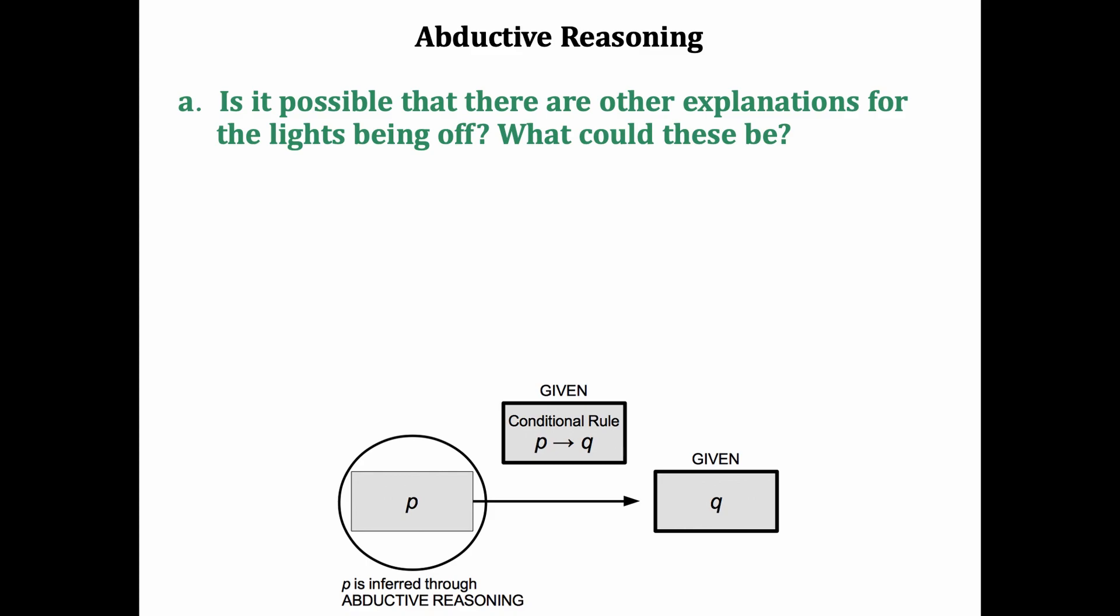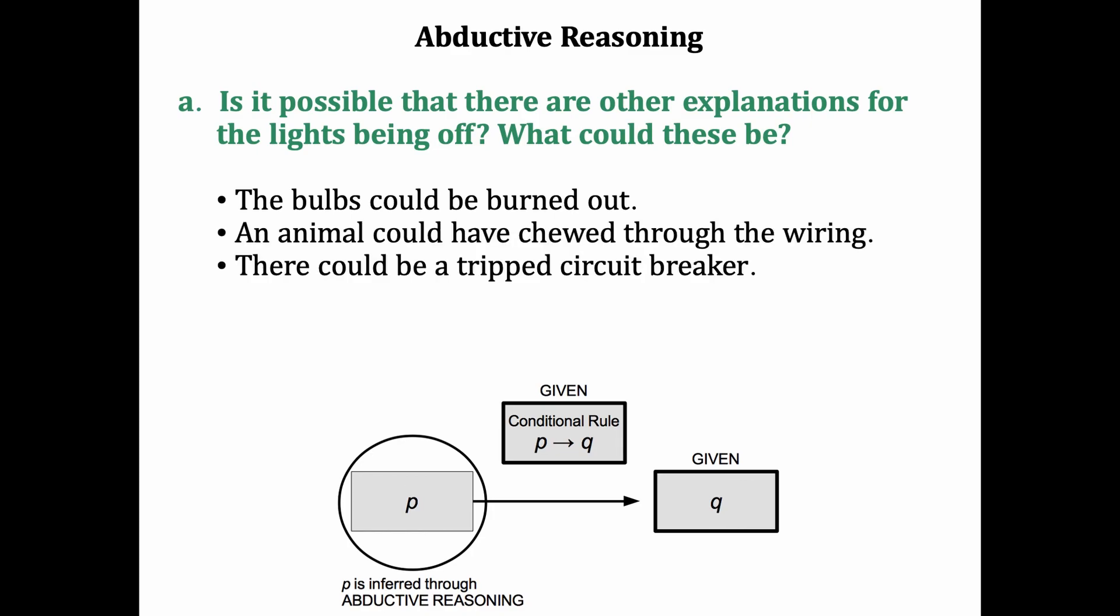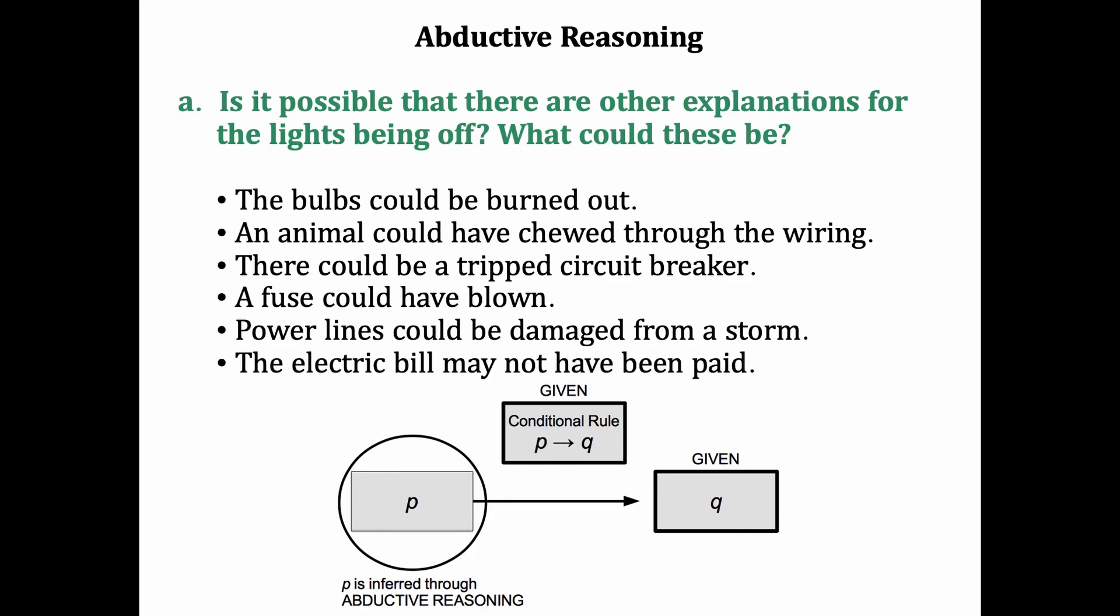But is it possible that there are actually other reasons for the lights being off? What could these be? Take a moment and brainstorm for yourself some possible causes for Q besides the light switch. It could be that the bulbs are burned out. Maybe an animal chewed through the wiring. There could be a tripped circuit breaker. A fuse could have blown. Power lines might have been damaged in a storm. Or you might have an unpaid electric bill. And there could be many other possibilities too that we didn't think of.